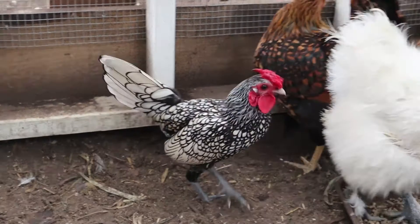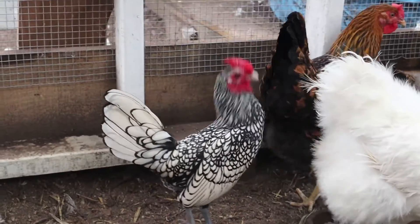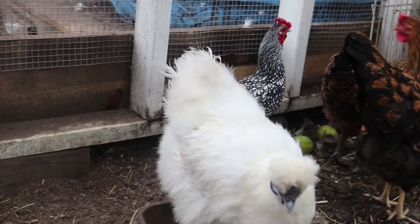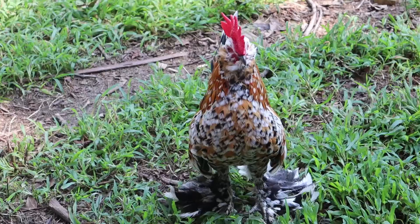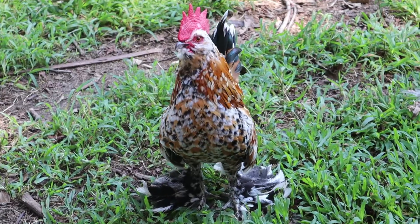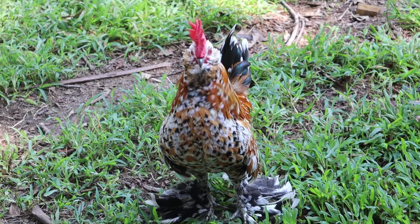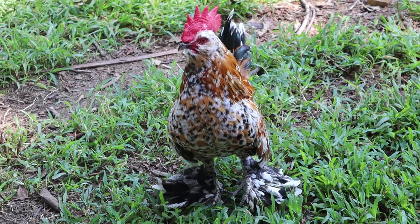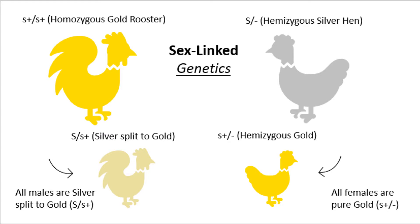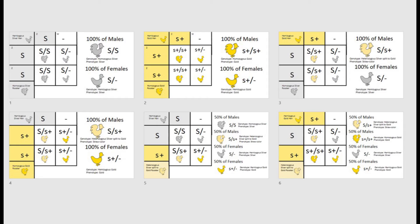This is especially helpful in breeds that only come in a few varieties, making the options limited. In this video, I will go over how the silver and gold alleles work, a little bit into how sex linkage works, and six different Punnett squares with all the possibilities out there of breeding silver and gold.